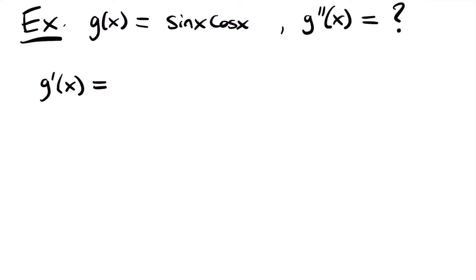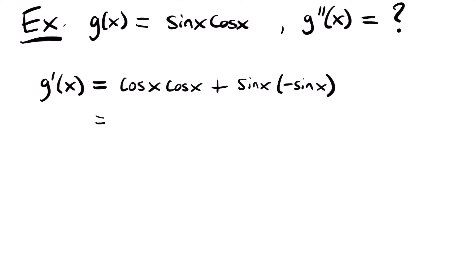We'll start by taking the derivative of our first function, sine x, which equals cosine x, and multiply it by our second function cosine x. Then we add our first function sine x multiplied by the derivative of our second function, which is negative sine x. Now, typically I would combine cosine x times cosine x to cosine squared x, but that would require a derivative rule we haven't used yet. So I'll keep these separate. We'll have cosine x times cosine x, minus sine x times sine x.